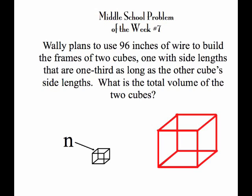Since the small one's length is one-third the large one, we can call the length of each edge of the small one n and the length of each edge of the large one 3n.